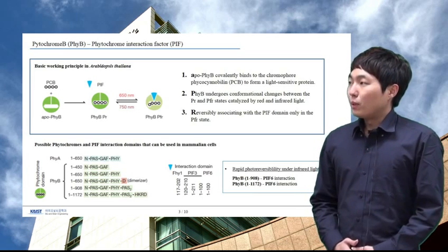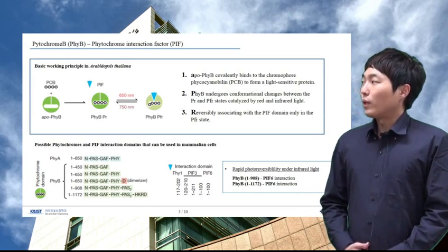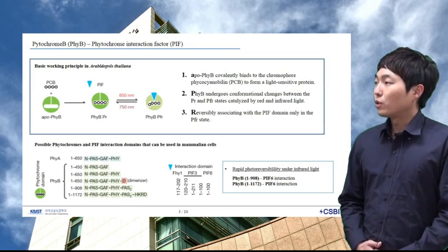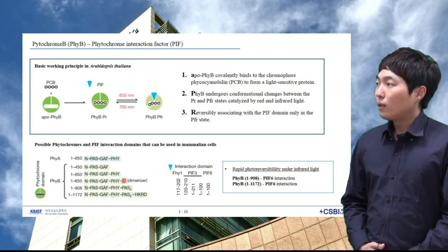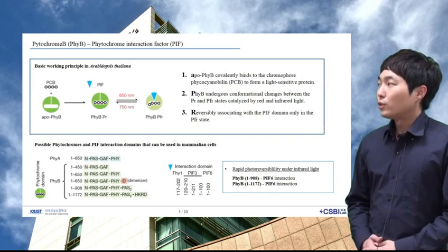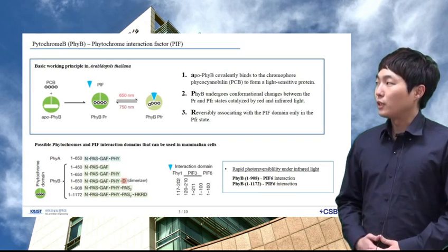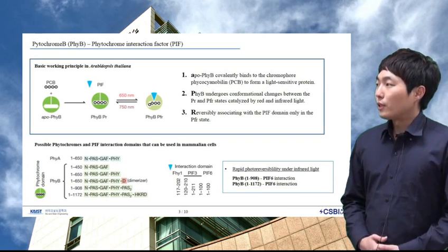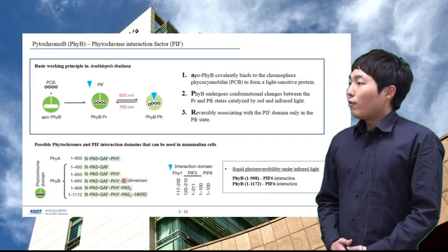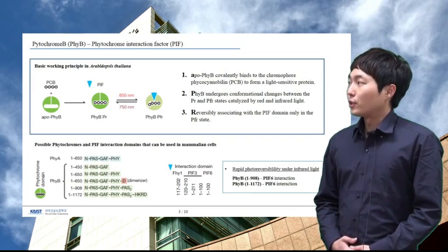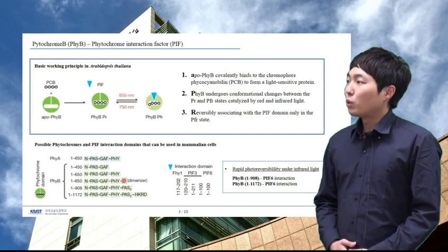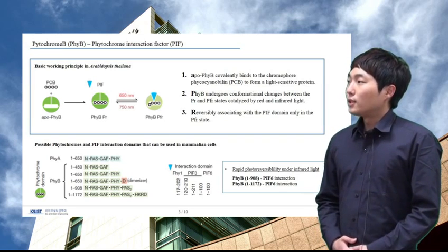The working principle is simple. Phytochromes detect red and near-infrared light through the photoisomerization of a covalently bound phycocyanobilin PCB. This photoisomerization event is coupled to an allosteric transition in the phytochrome between two conformational states called PR and PFR. Among various phytochromes and PIF interactions, only Phytochrome-B and PIF-6 interaction has rapid photoreversibility property in mammalian cells.